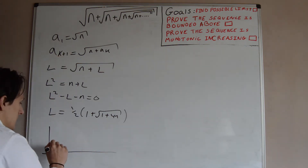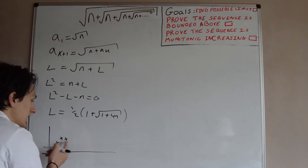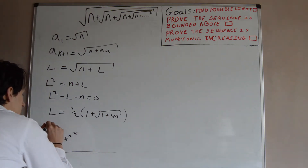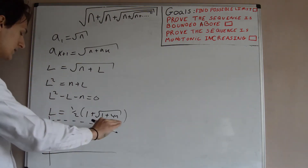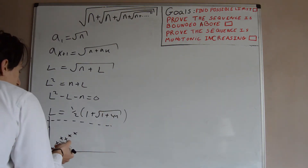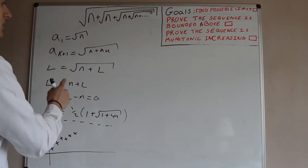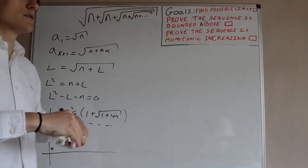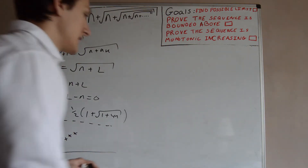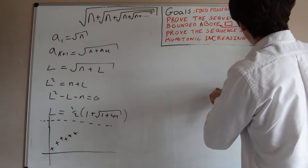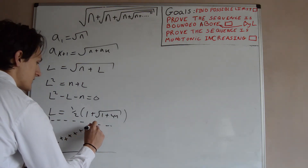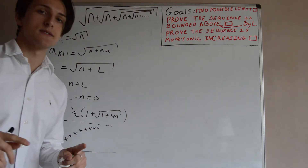Say we have a₁, a₂, a₃, a₄, a₅, and so on, with each term less than or equal to the next. We're going to bound it by L, the possible limit — showing every term is less than or equal to L. It's neat to bound by L in this case, though bounding by something larger like 20L + a million would also work. For the base case, a₁ = √n. Now L = ½ + ½√(1 + 4n), which is greater than or equal to ½√(1 + 4n), which is greater than or equal to ½√(4n) = √n. So a₁ ≤ L.